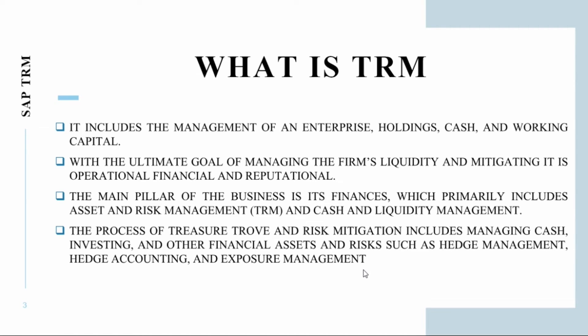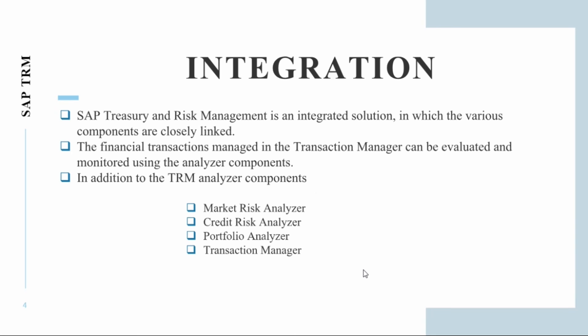The main pillar of business is its finances, which primarily includes asset and risk management — TRM — and cash liquidity management. The process of treasury and risk management mitigation includes managing cash, investing, and other financial assets such as hedge management, hedge accounting, and exposure management. TRM is integrated in that financial transactions managed in the transaction manager can be evaluated using the analyzer components. The analyzer components include the market risk analyzer, credit risk analyzer, portfolio analyzer, and transaction manager.